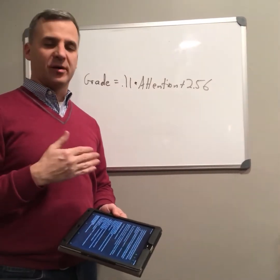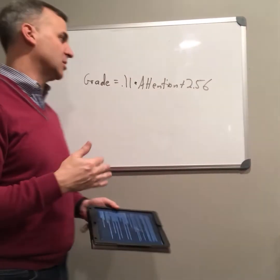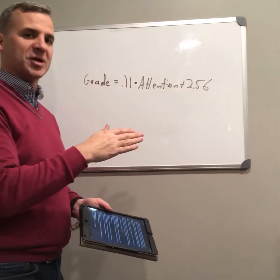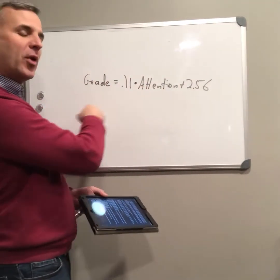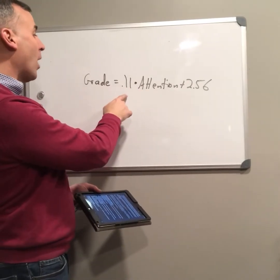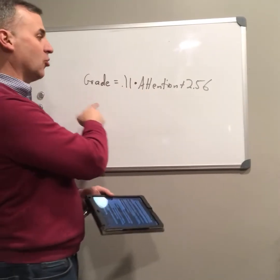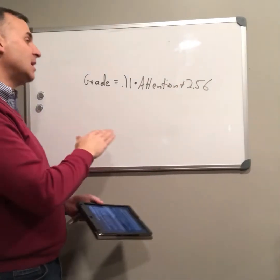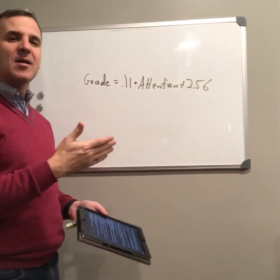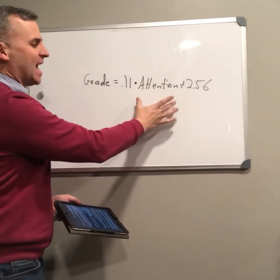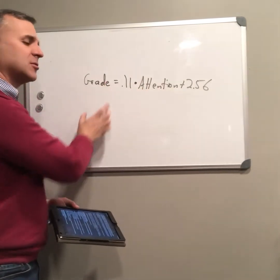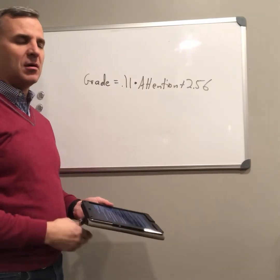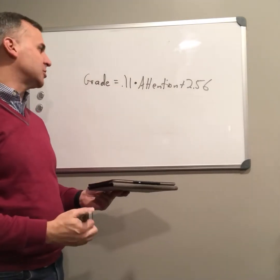Sometimes it can be a little hard in this interpretation. Remember from the video on how to interpret the regression equation — we said every single point increase in x, we have a 0.11 increase in grade, scaled by the y-intercept of 2.56. But if I don't really understand the scale of attention, and I don't really understand the scale of grade, this can be really confusing.